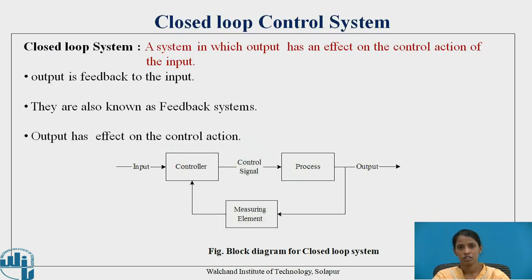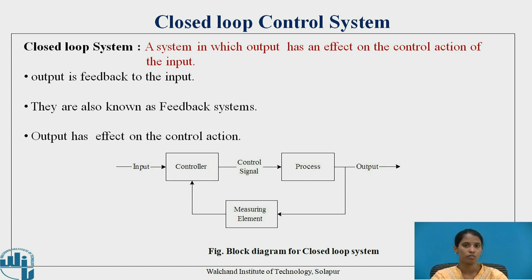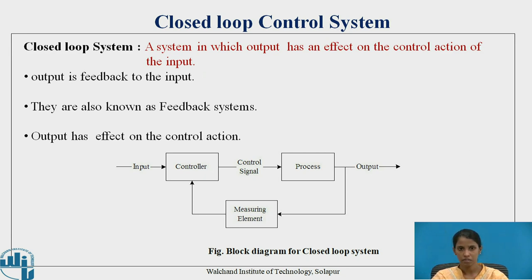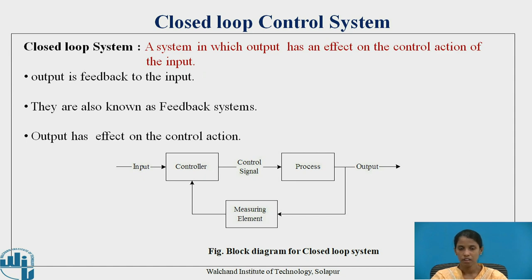A closed loop control system is a system in which the output has an effect on the control action of the input. Here the output is fed back to the input, so these systems are also known as feedback systems. As seen in the block diagram for a closed loop system, the input is given to the controller and the output of the controller is the control signal.